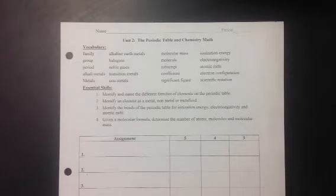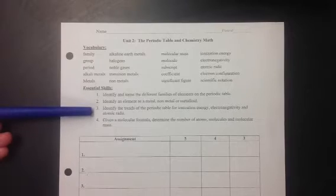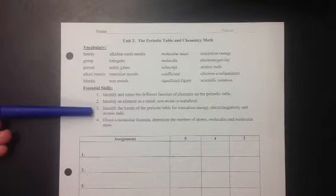All right, this is Misty Maria, and I am going to explain to you essential skill number three, how to identify the trends of the periodic table for ionization energy, electronegativity, and atomic radius.